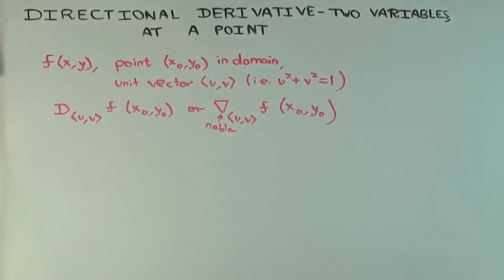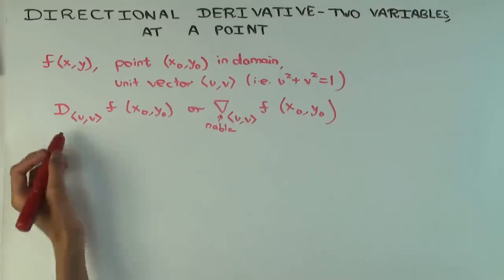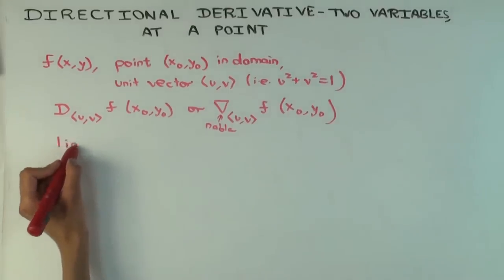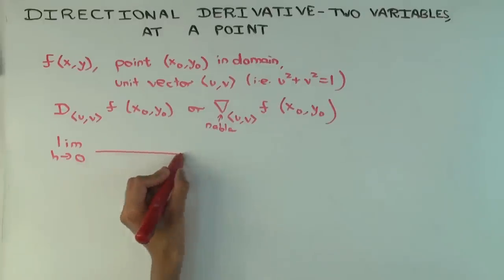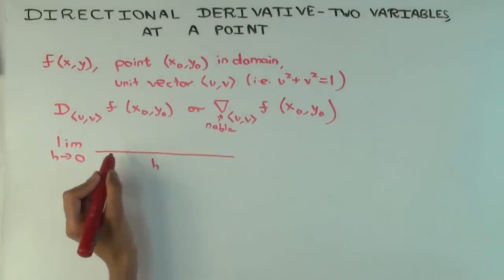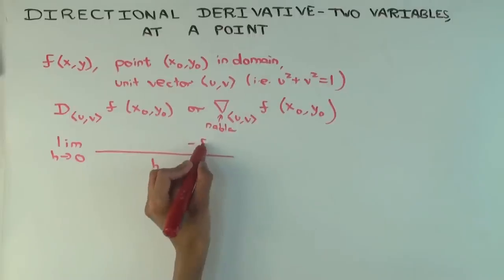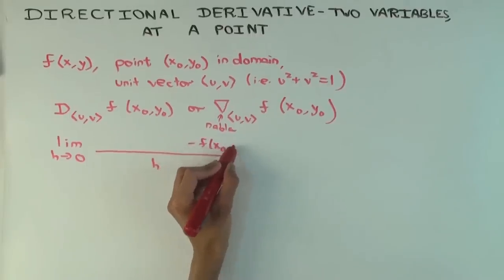How is this directional derivative defined? As a limit. What do you think it should be if you're trying to define as a limit? That would be the difference quotient. So you put an h downstairs and you have minus f of x₀ y₀ here.